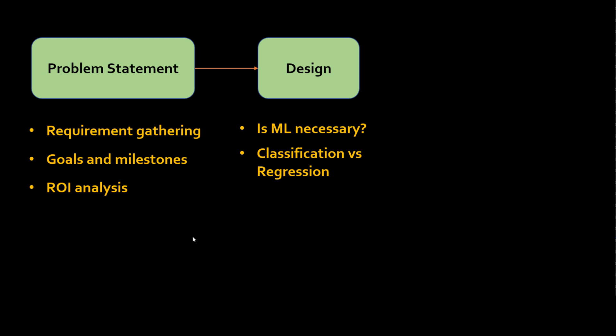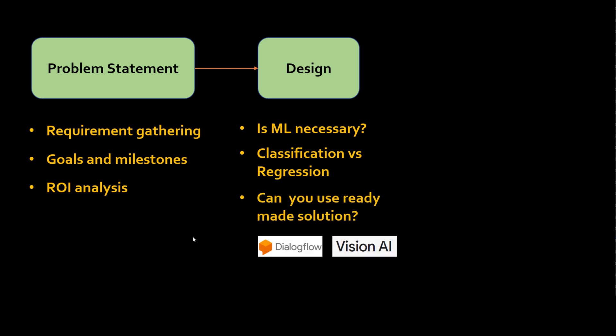If you ruled out simpler approaches and machine learning makes sense, then you determine what type of problem you are solving — classification, regression, or reinforcement learning. Next, consider whether you can use a ready-made solution. For example, for a chatbot, can you use Google's Dialogflow? For image classification, can you use Google Vision API? If a ready-made solution fits your budget, use it — it will save a lot of time.